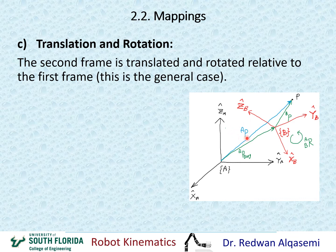So given P of B relative to A, and given the rotation of B relative to A, and given P relative to B, I need to find P relative to A.